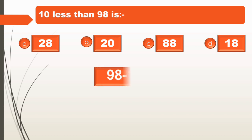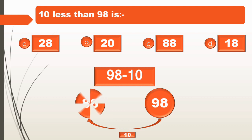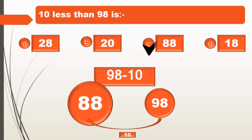All of you know — less means subtraction. We subtract 10 from 98. 98 minus 10 will be equal to 88. So we get 88. Option C, 88, is the correct answer.